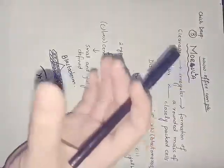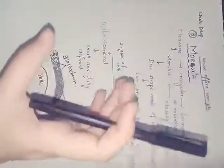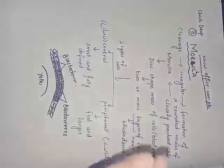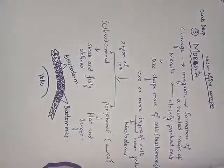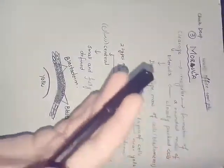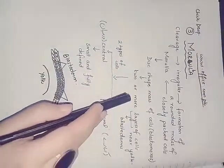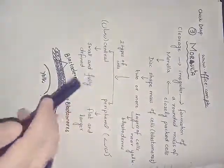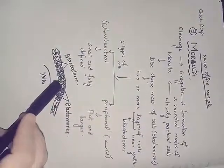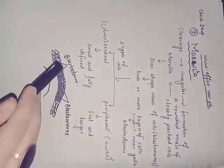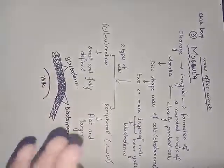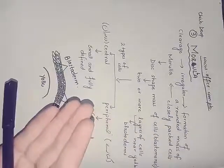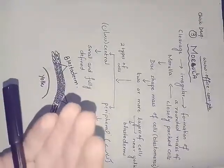The morula is like a round disc-shaped mass, and the blastomeres arrange themselves in the form of two or more layers. Near the yolk, these layers are known as blastoderm—'derm' means layer.